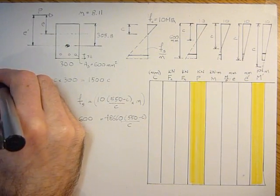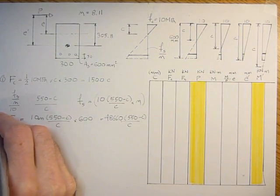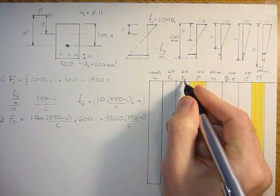So that's your first equation, force in the concrete. Your second equation is force in the steel.